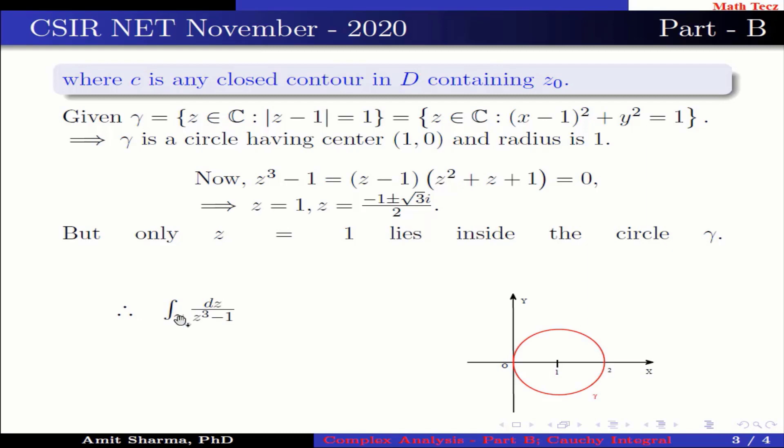Therefore, integration over gamma dz divided by z cube minus 1 equals integration over gamma, 1 upon (z square plus z plus 1) divided by (z minus 1) dz, which equals 2 pi i divided by 1 factorial, and the value of 1 upon (z square plus z plus 1) at z equal to 1, which equals 2 pi i by 3.